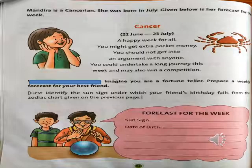Mandira is Cancerian. She was born in July. Given below is her forecast for the week. Cancer: 22 June to 23 July. It means the children who are born between 22 June to 23 July are having the Cancer zodiac sign. A happy week for all — you might get extra pocket money. You should not get into an argument with anyone. You could undertake a long journey this week and may also win a competition.